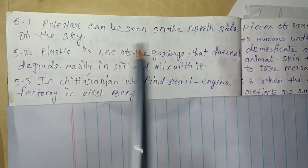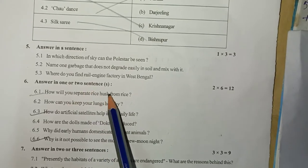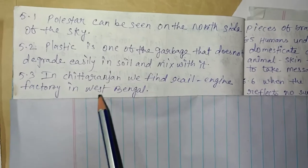5.3: Where do you find rail engine factory in West Bengal? In Chittaranjan we find rail engine factory in West Bengal.